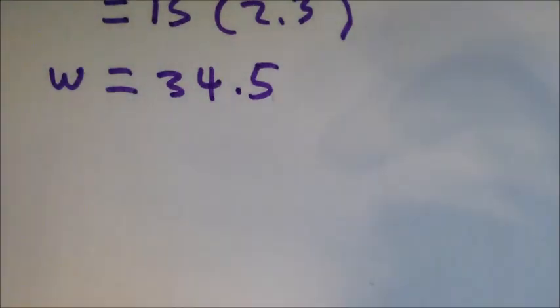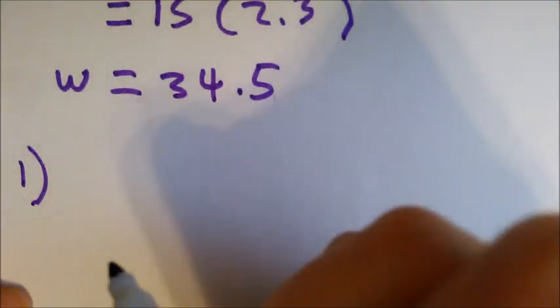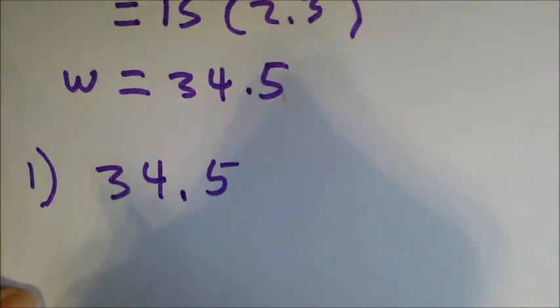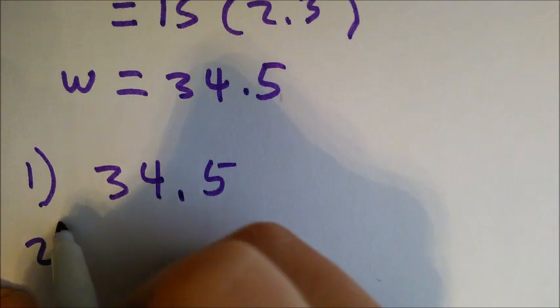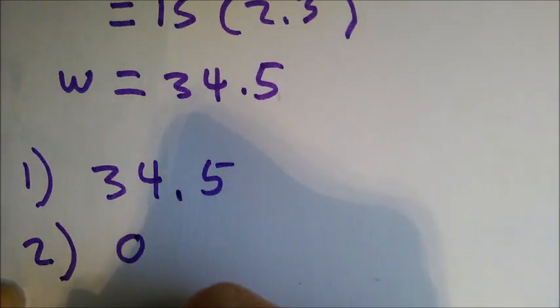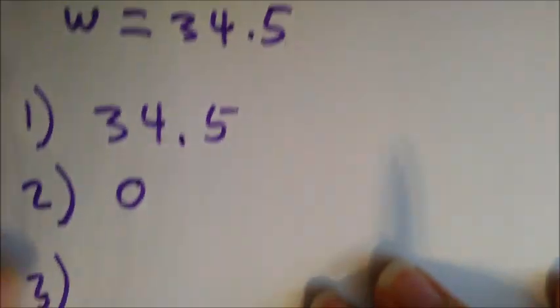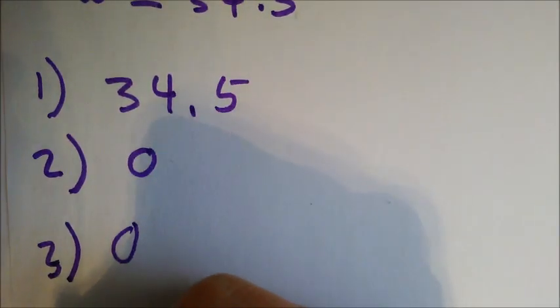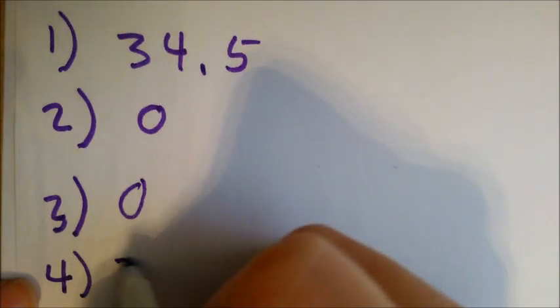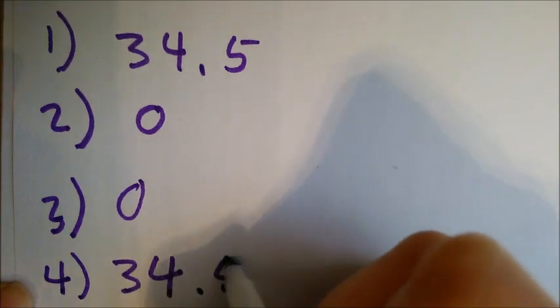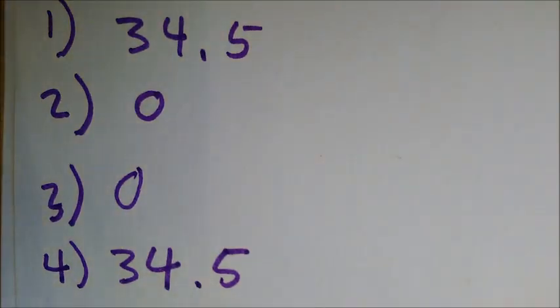Alright, to sum it up. The force, part 1, the net on the block is 34.5. For 2, the force on the table would be 0. The normal force would be 0. And the normal force on the gravity would also be 0. Because, distance is 0. And lastly, 4 would also be 34.5. The total net force done on the block would be 34.5. Because, that was the only work that's done on the block.